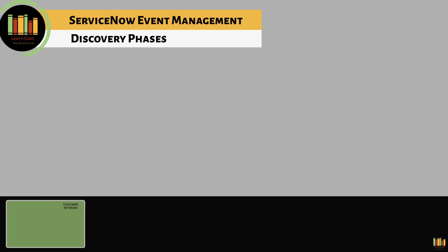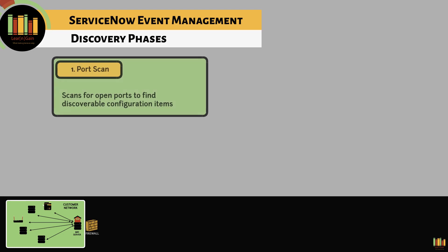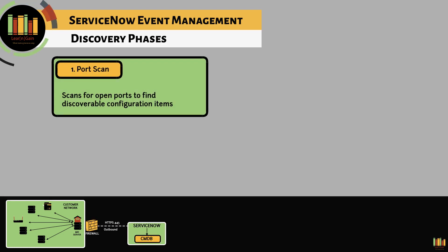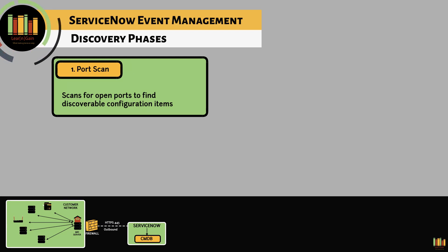The four phases of discovery are: Ports Scan — scans your IT environment for discoverable configuration items within the defined IP range. The open ports provide information on the type of device; for example, port 135 for Windows and port 22 for Linux.